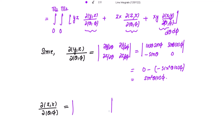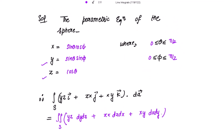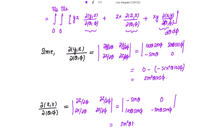Similarly, we evaluate ∂(z,x)/∂(θ,φ), which is the determinant of [∂z/∂θ, ∂z/∂φ; ∂x/∂θ, ∂x/∂φ]. Differentiating z with respect to θ gives −sin(θ). This gives sin²(θ)sin(φ), and differentiating x with respect to φ gives −sin(θ)sin(φ). So this equals sin²(θ)sin(φ) minus 0, which equals sin²(θ)sin(φ).